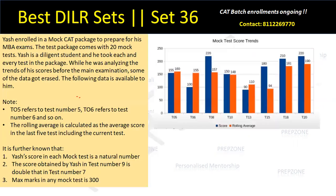Let's go back to the question. Yash enrolled in a mock CAT package to prepare for his MBA exams. The test package comes with 20 mock tests. He's a diligent student and took each and every test in the package. While analyzing the trends of his scores before the main examination, some data got erased. The graph shows T5 refers to test number 5, T6 refers to test number 6, and so on. His score in test number 5 is 155, and the rolling average is 160.